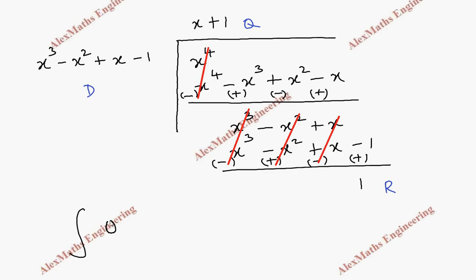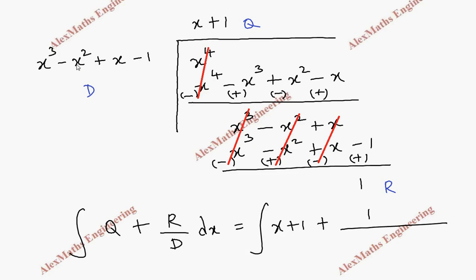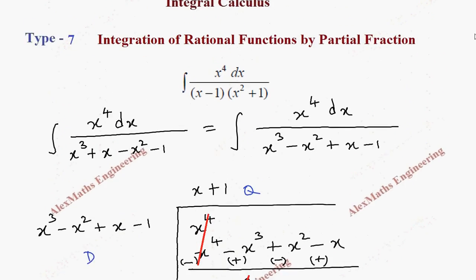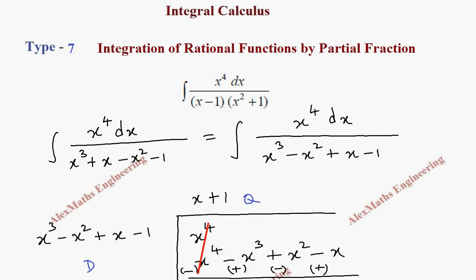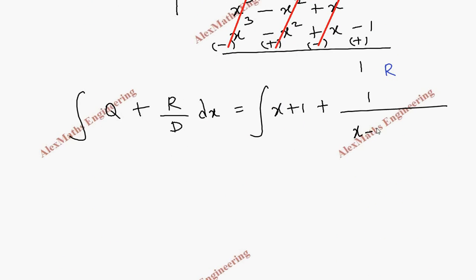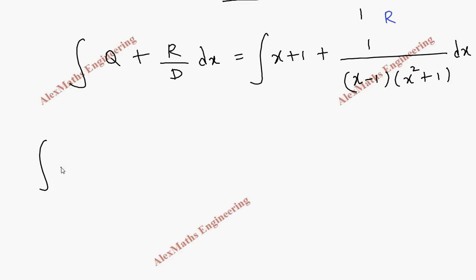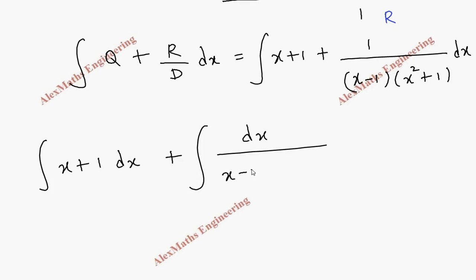So we write the integral as quotient plus remainder over divisor, times dx. The quotient is x plus 1, the remainder is 1, and the divisor is the entire term — but instead of writing the entire term you can write it as the factors x minus 1 times x squared plus 1. So we have x minus 1 times x squared plus 1 times dx. Now let's split this into two integrals: first is the integral of x plus 1 dx, and second is the integral of dx over x minus 1 times x squared plus 1.